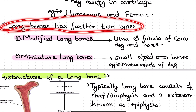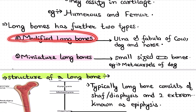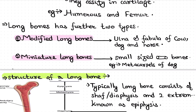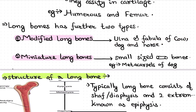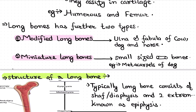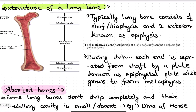Long bones are further classified into two subtypes. First, modified long bones — examples include the ulna and the fibula of the cow, dog, and horse. Second, miniature long bones, which are small-sized cylindrical bones — for example, the metacarpals of the dog are generally miniature long bones.